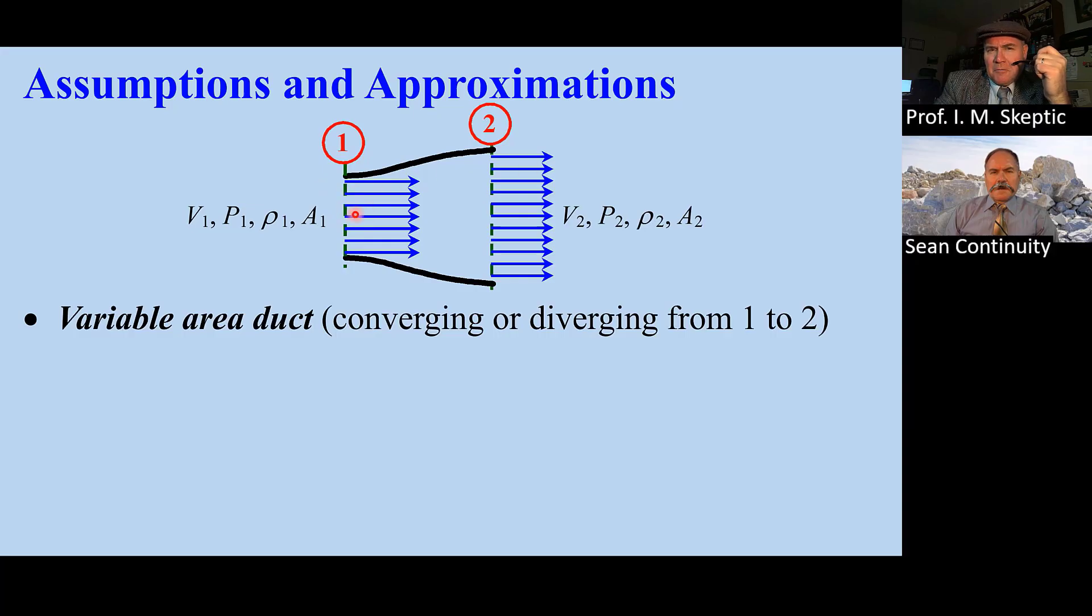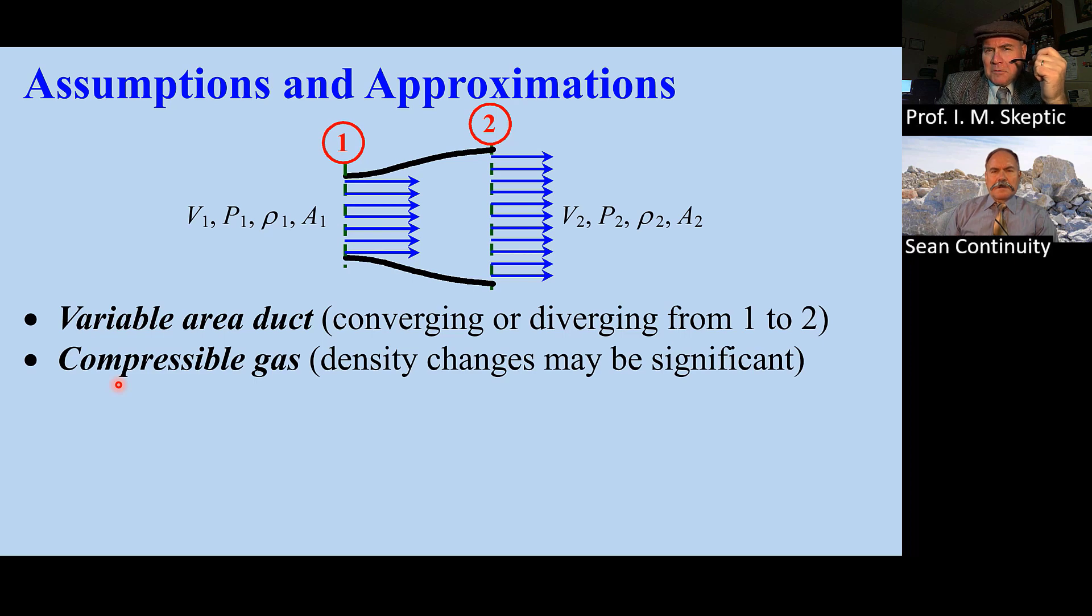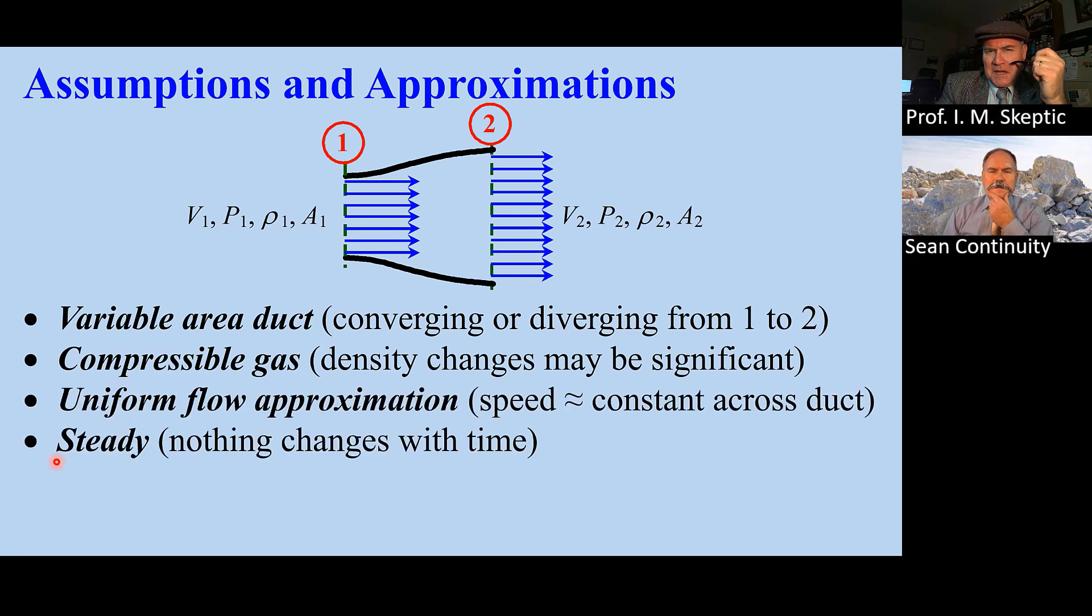We have a variable area duct from 1 to 2. We're talking about a compressible gas. We make the uniform flow approximation and assume that the flow is steady, isentropic,